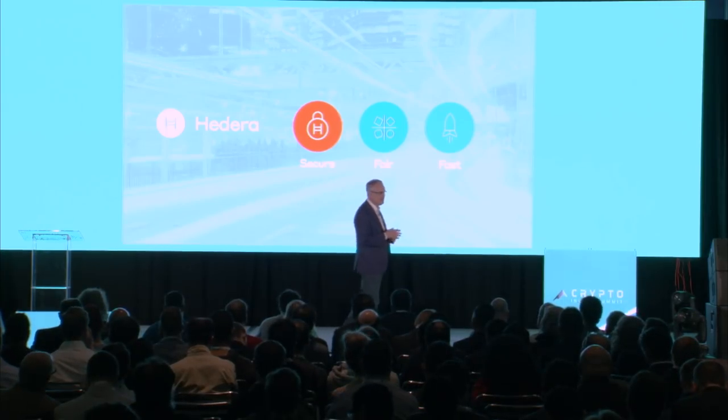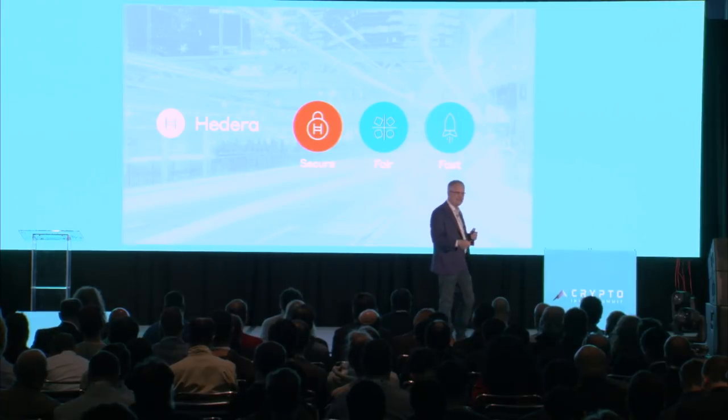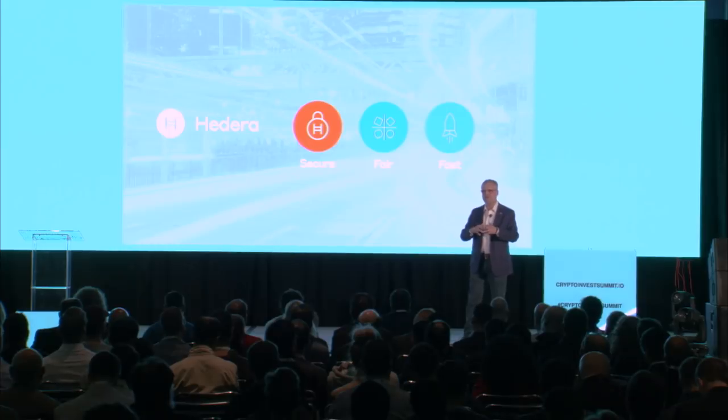What that means practically is that for the first time it's possible to build a whole set of distributed applications that previously would have been insecure. For example, distributed auctions — who pushes the button first makes all the difference. Or a distributed stock market — you don't want one party to prevent a bid from flowing in or influence the order of bids. Or multiplayer games where two people reach to pick up the pot of gold — which one pushed the button first matters. This fairness property makes it possible to build those applications in a fundamentally fair way.